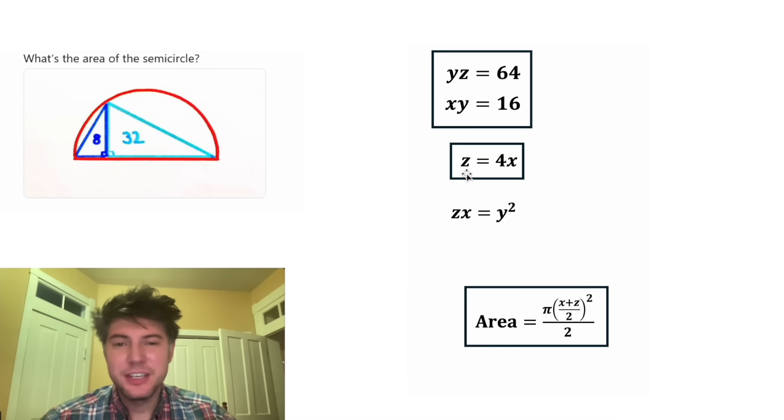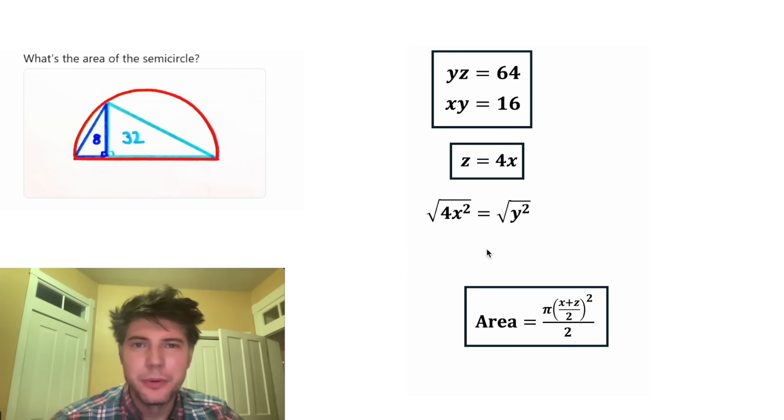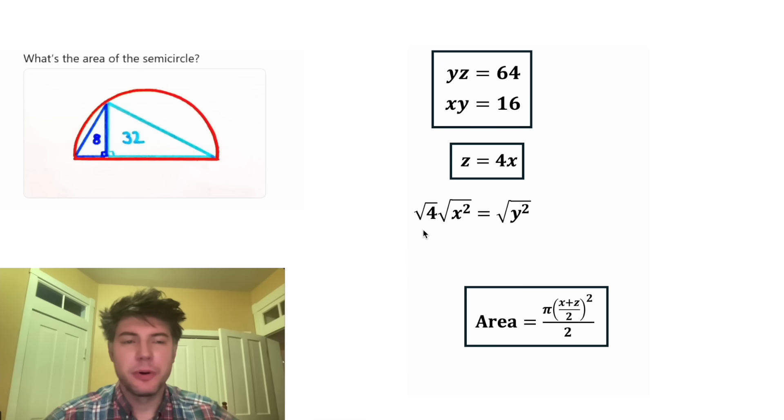So next, let's play with this ZX equals Y squared. Up here, we have Z equals 4X. So in the place of this Z, let's plug in 4X. And then 4X times X is 4X squared. From here, we can square root both sides. And square root of 4X squared is the same thing as square root of 4 times square root of X squared. Square root of 4 is equal to 2. And before we do the square roots of these, we need to note that X and Y are both positive numbers.